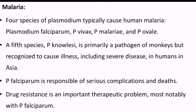There are four species of Plasmodium that typically cause human malaria: Plasmodium falciparum, Plasmodium vivax, Plasmodium malariae, and Plasmodium ovale. A fifth species, Plasmodium knowlesi, is primarily a pathogen of monkeys but is recognized to cause illness, including severe disease in humans in Asia.